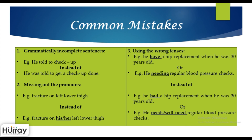Some common mistakes that candidates often make are as follows. First, writing grammatically incomplete sentences — for example, 'he told to checkup' instead of 'he was told to get a checkup done.' Second, missing out on pronouns — for example, 'fracture on left lower thigh' should indicate whose thigh it is: 'fracture on his left lower thigh.' Third, using the wrong tenses — for example, 'he have a hip replacement when he was 30 years old,' or writing 'he needing regular blood pressure checks' without a proper verb. The correct sentences are: 'He had a hip replacement when he was 30 years old' or 'He needs regular blood pressure checks.'